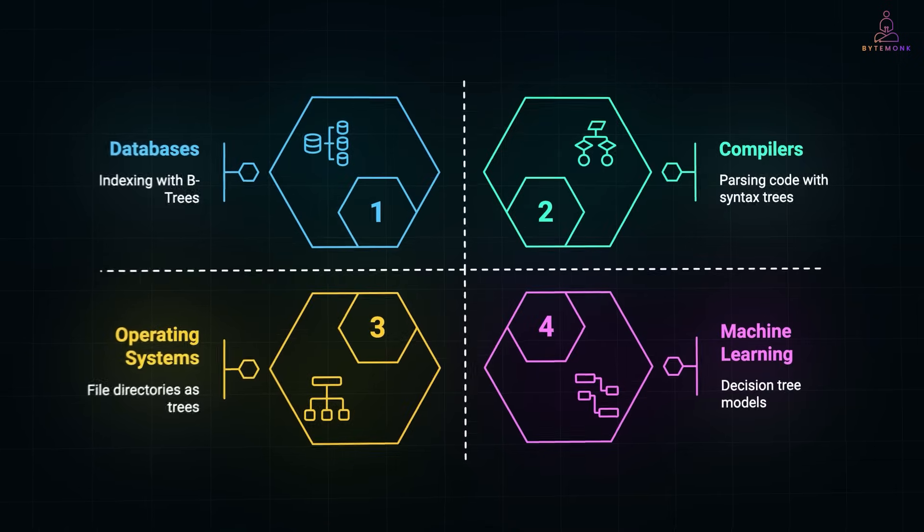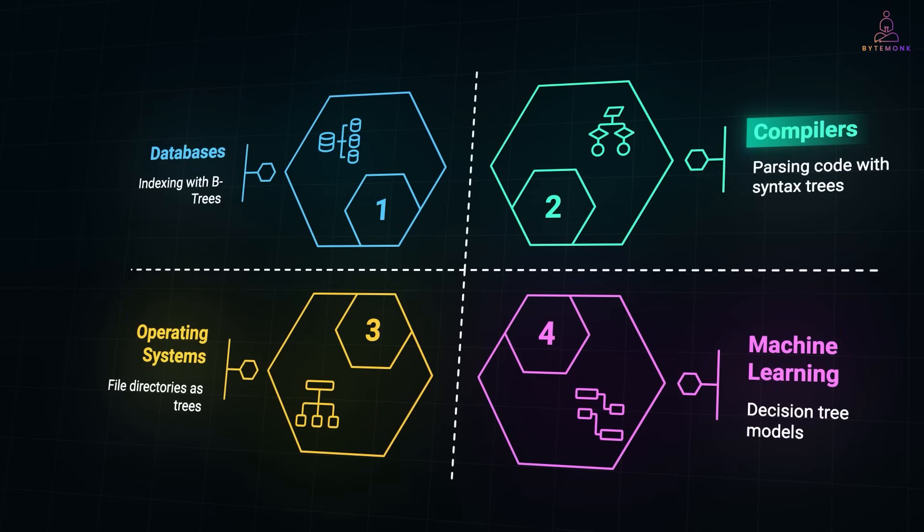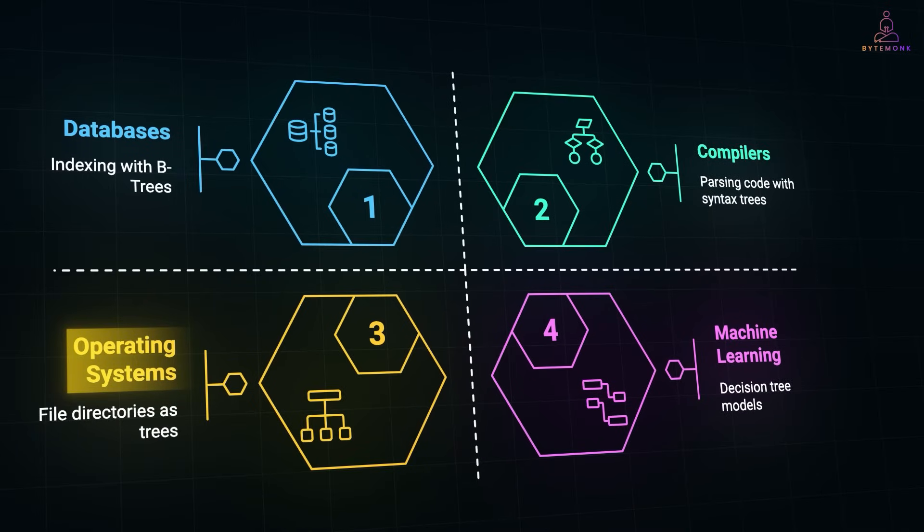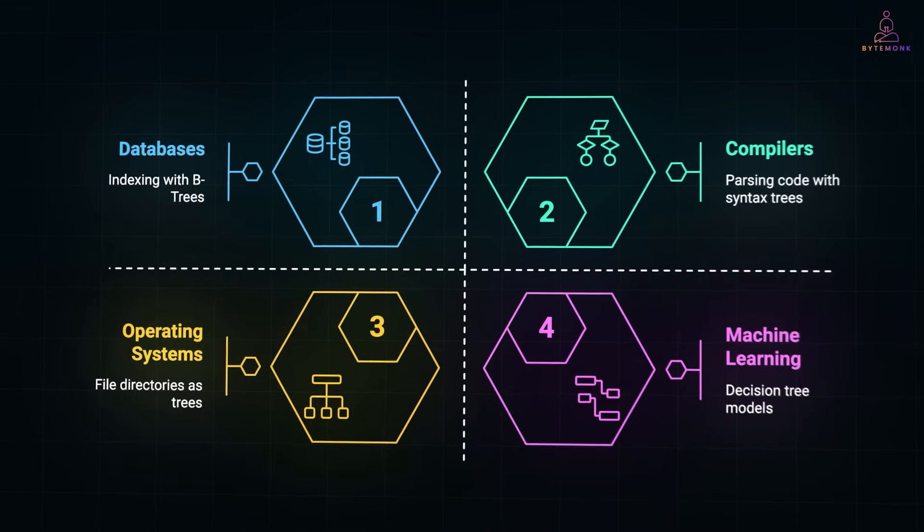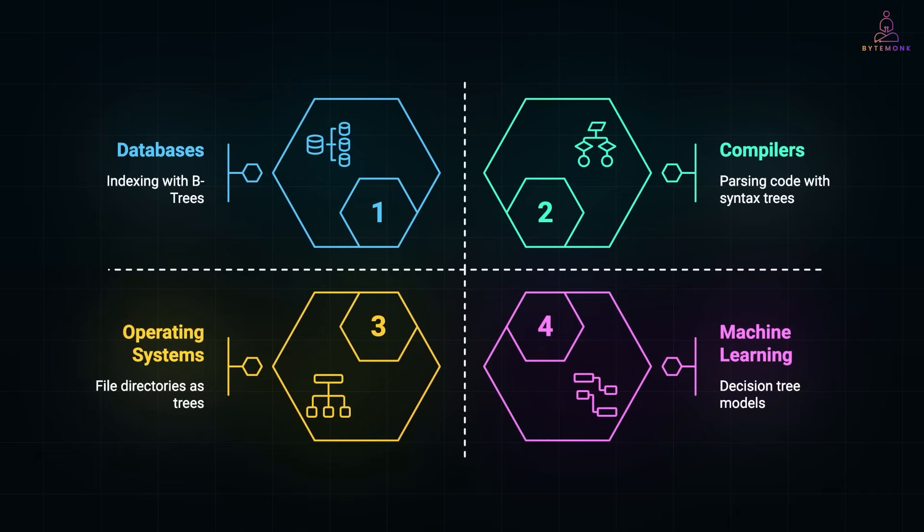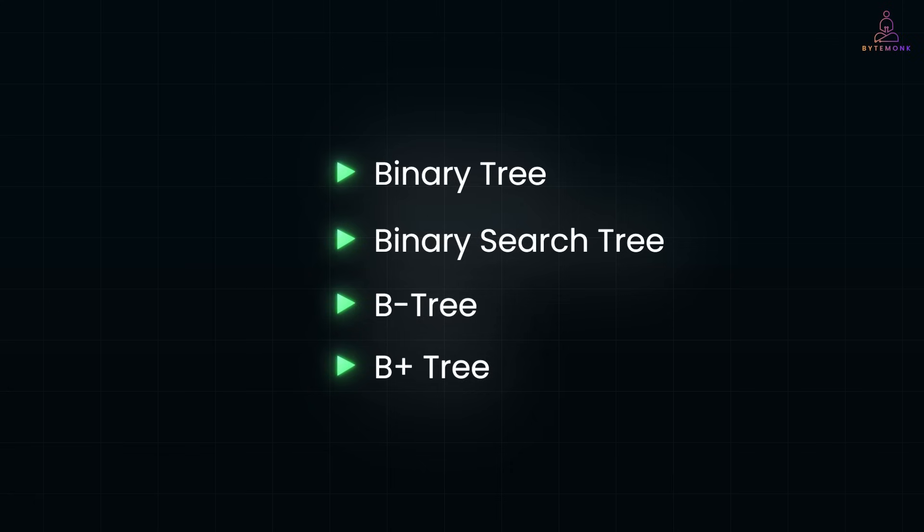Trees are everywhere. Databases use B-trees and variants for indexes. Compilers use syntax trees to parse code. Operating systems use trees for file directories. Even machine learning models like decision trees. Let's look at where trees show up in real systems. You've probably heard terms like binary tree, binary search tree, B-tree and B+ tree. And while they sound similar, they are used in very different places.